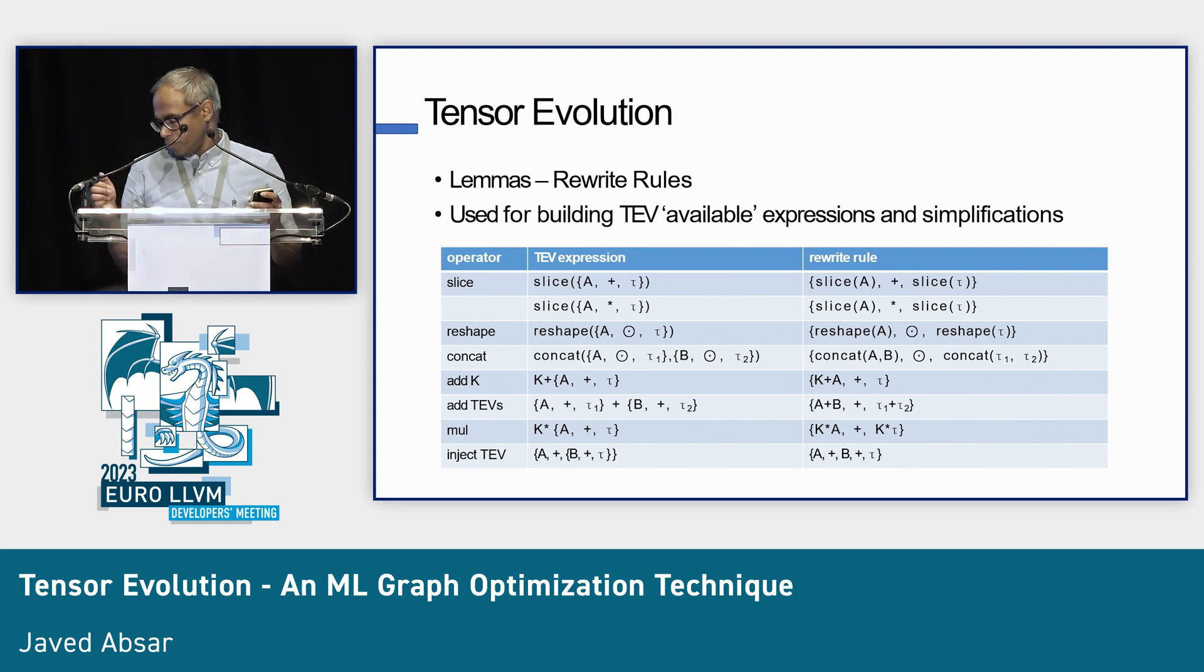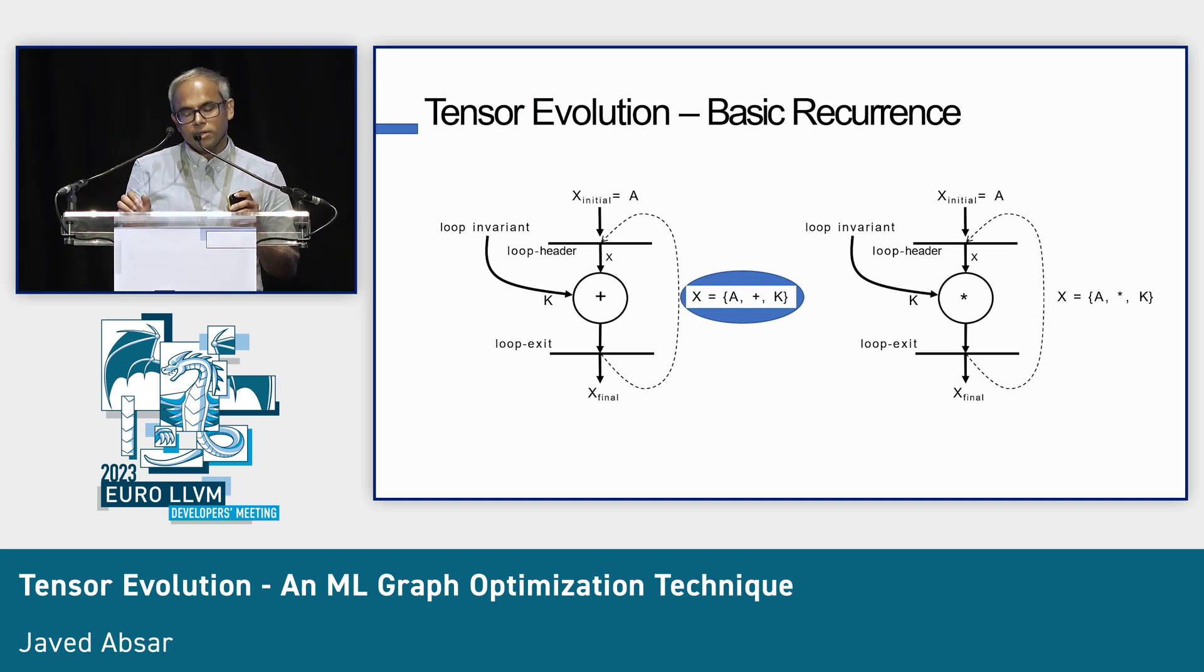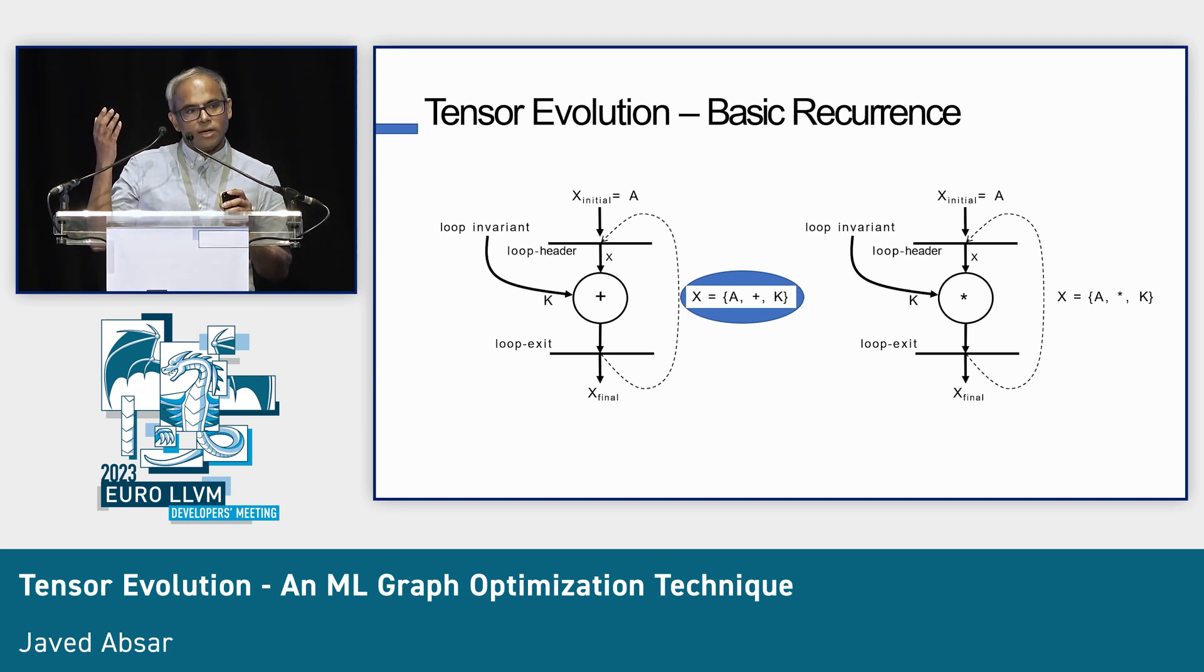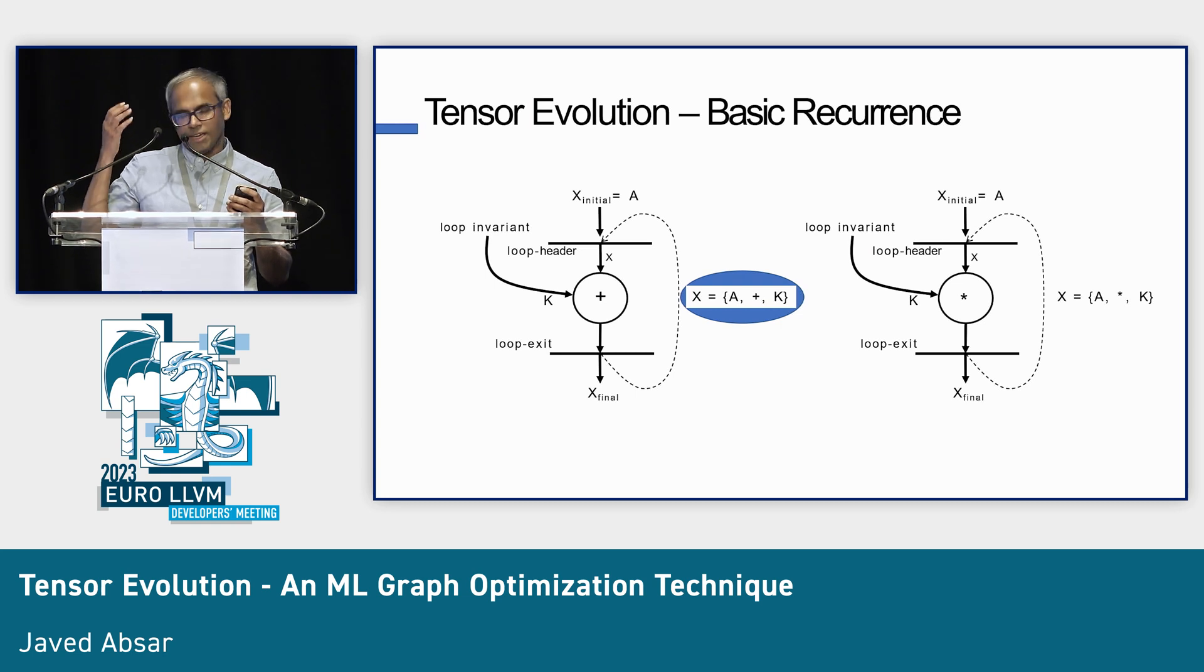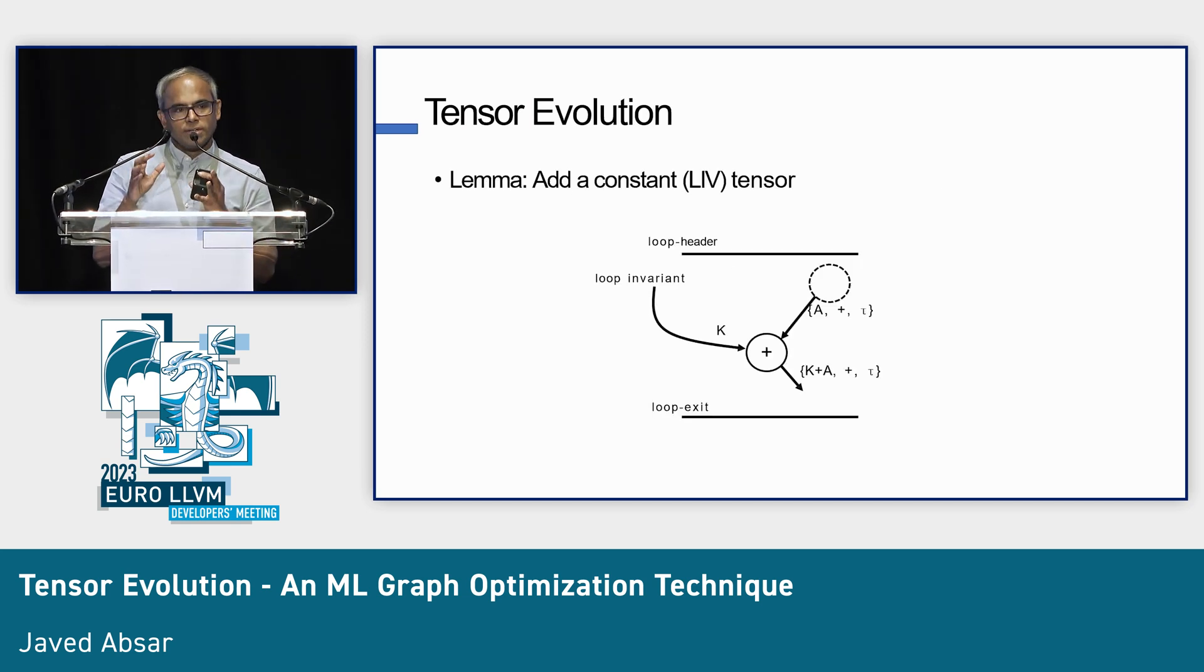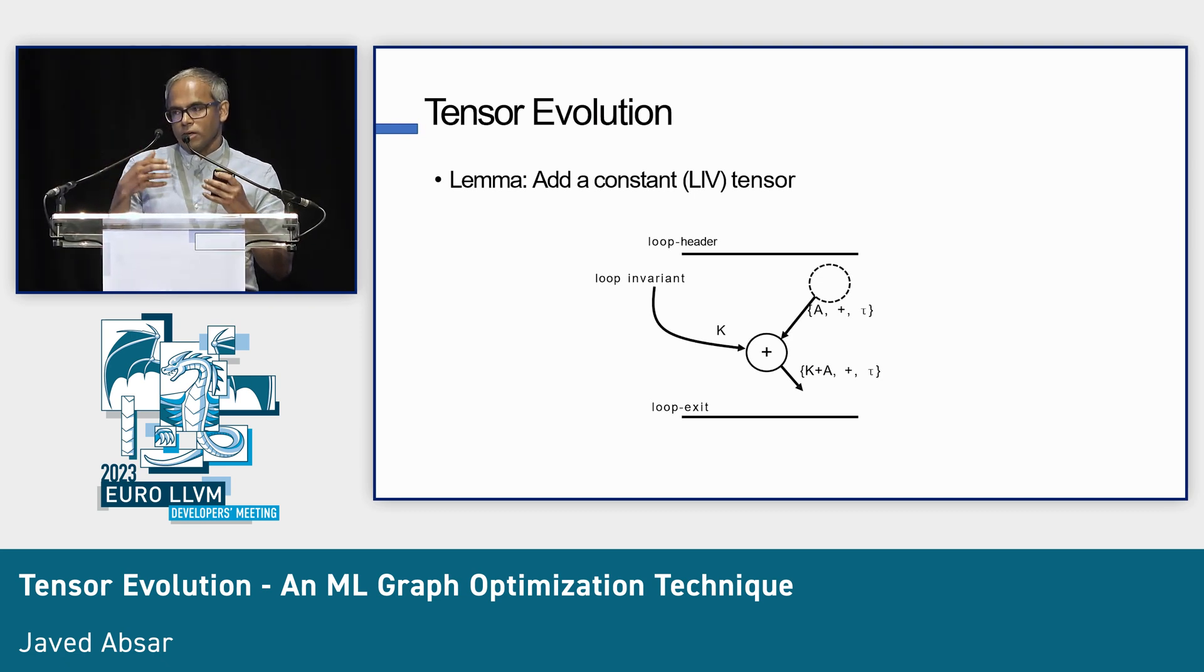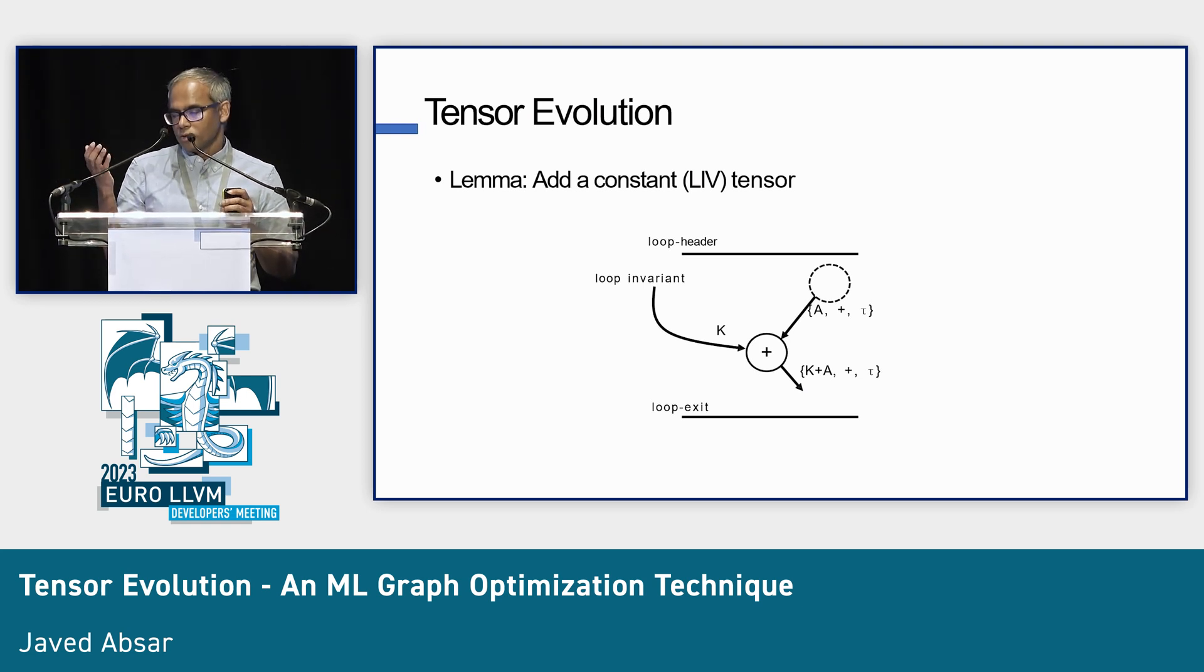I'll walk quickly through a few of them. The basic one we already saw, you've got X initial on the left-hand side of the slide. You've got X coming in. There's an initial value A. And every time that tensor X goes through the loop, a loop invariant K gets added. So the first time it's A plus K, then A plus 2K and stuff. The blue rectangle thing you see in there in the middle, that's your basic tensor evolution expression. Same thing from the right for the multiply. Once you build a basic tensor evolution expression, now if in your graph you've got an add operator that takes in a loop invariant and does something, you can derive these rewrites. If you're adding K to a basic tensor evolution expression, you have K plus A.